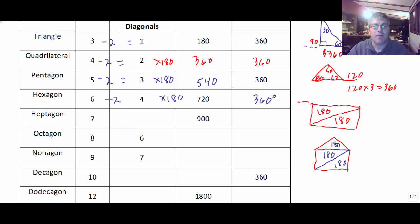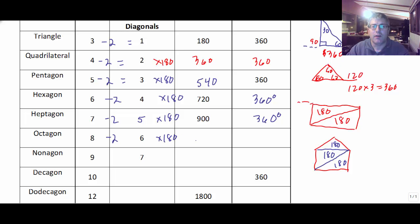So a heptagon has five triangles times 180 equals 900 degrees, and the sum of the exterior angles is 360. An octagon: subtract two to get six triangles times 180 degrees. The sum of the interior angles is 1080, and the sum of the exterior angles is 360.